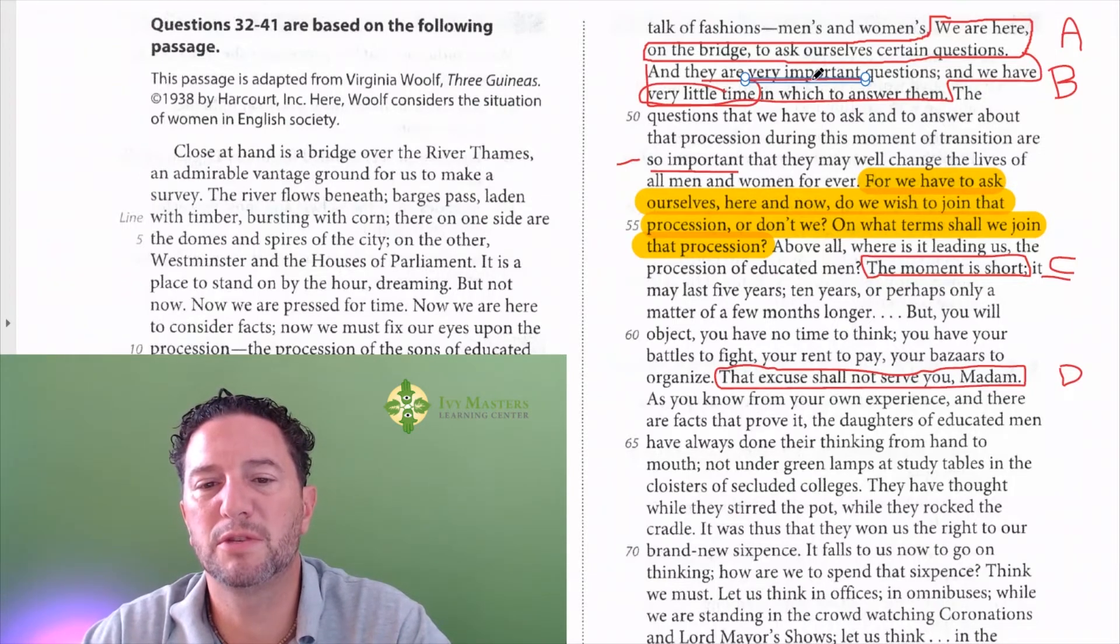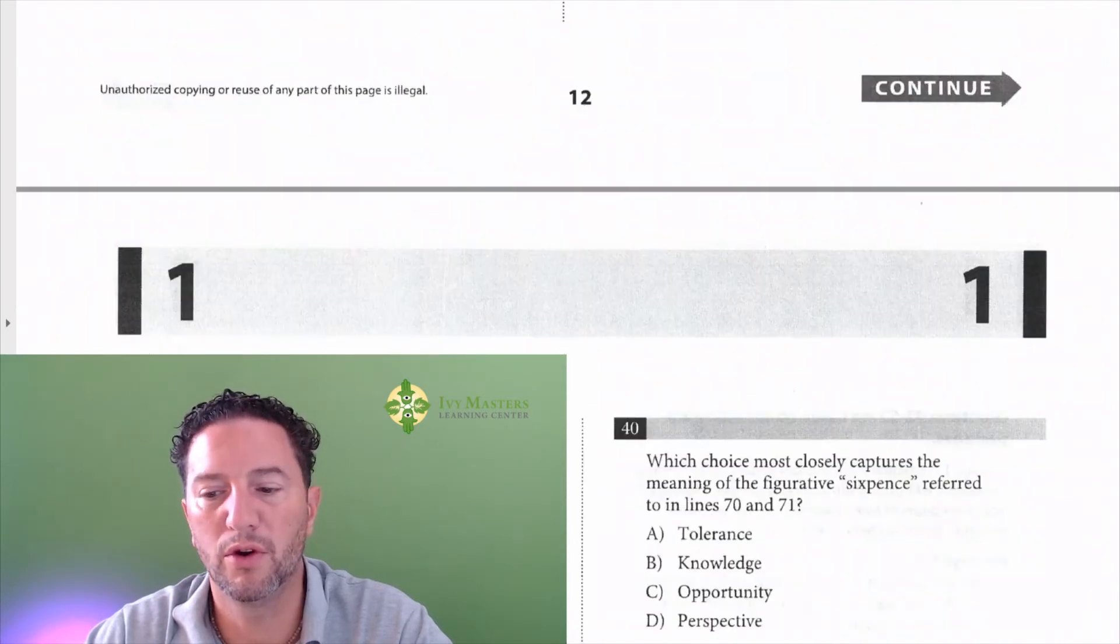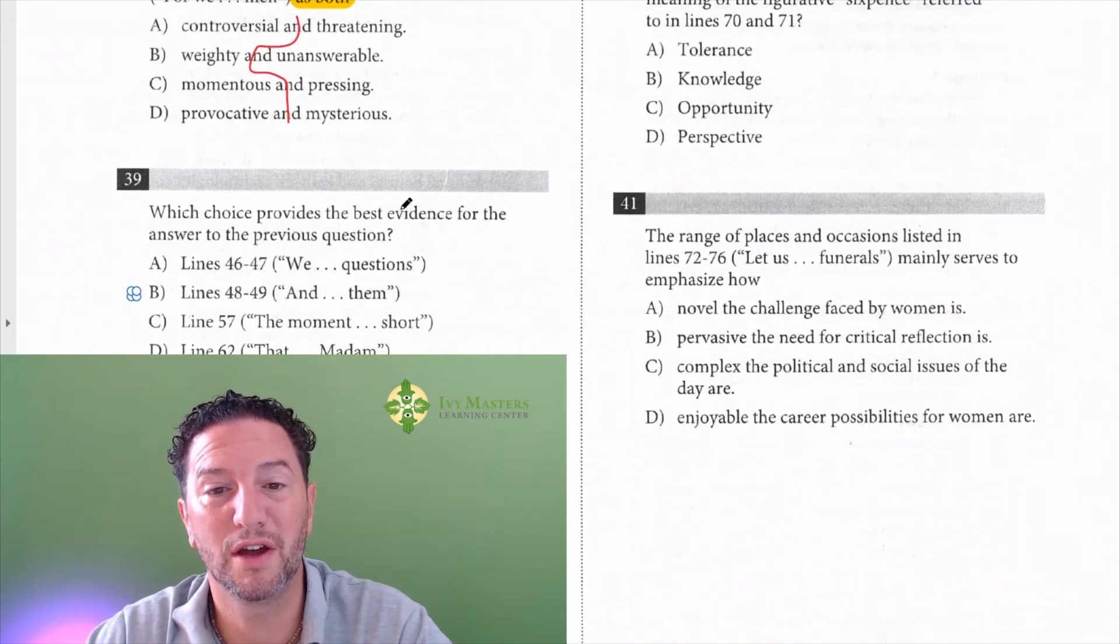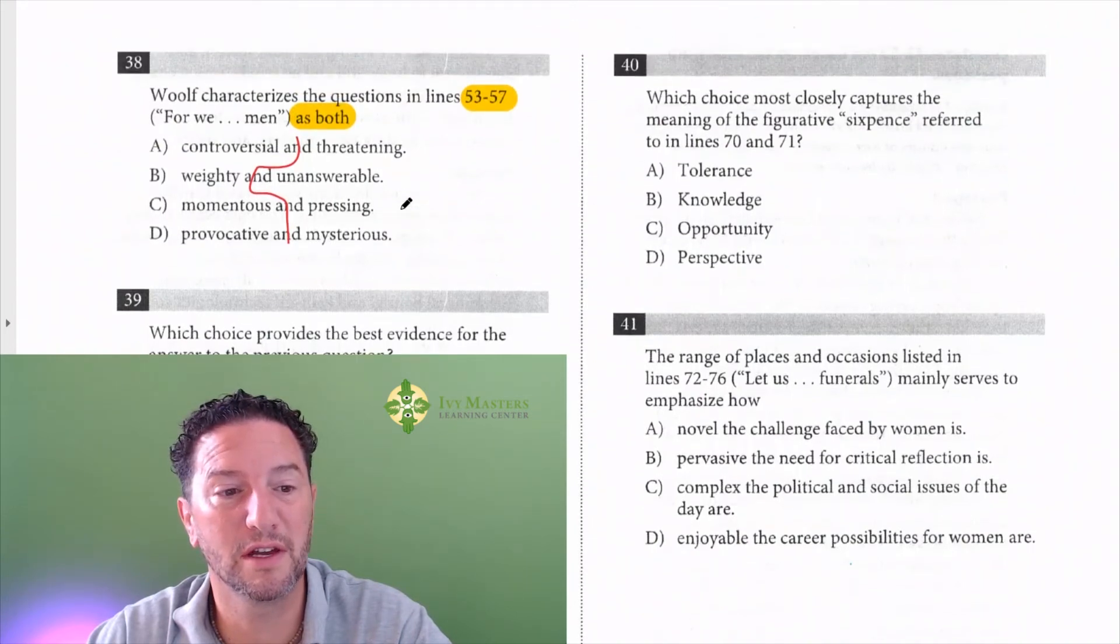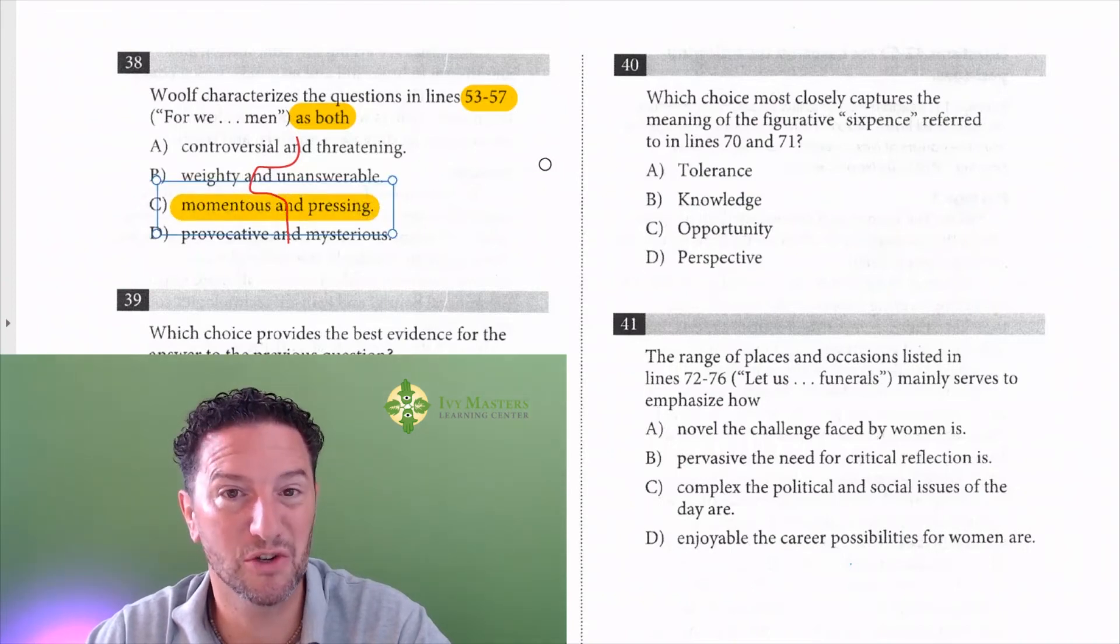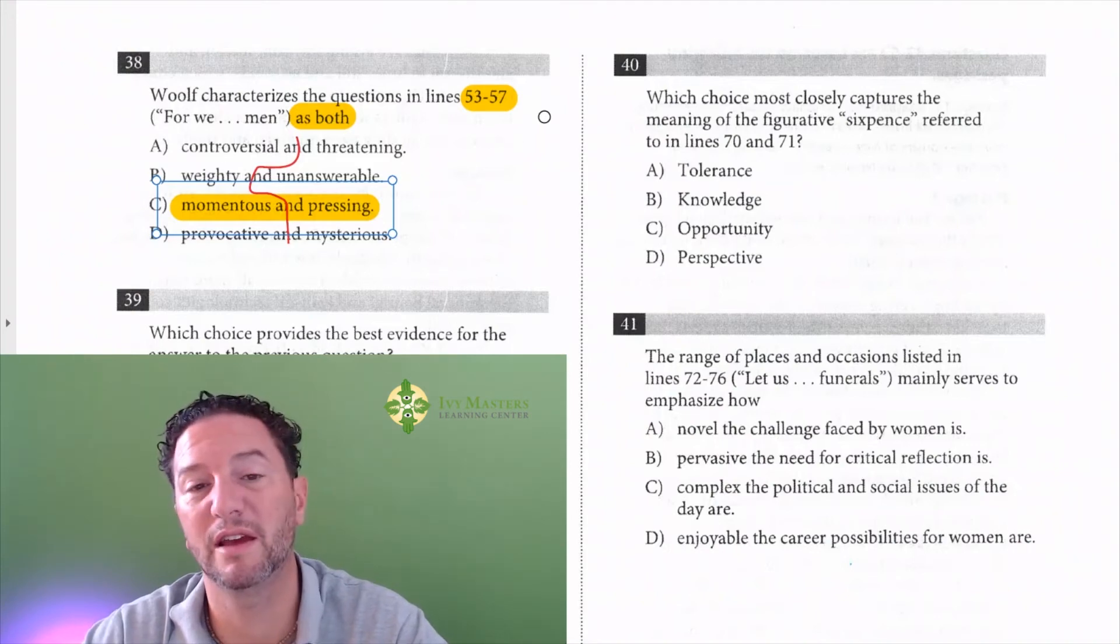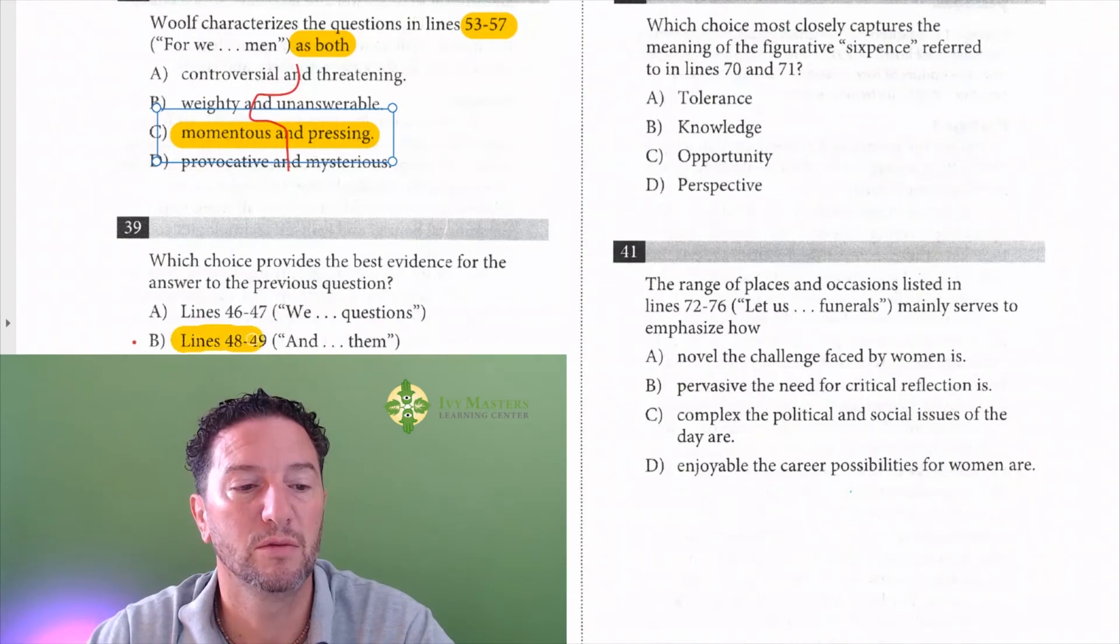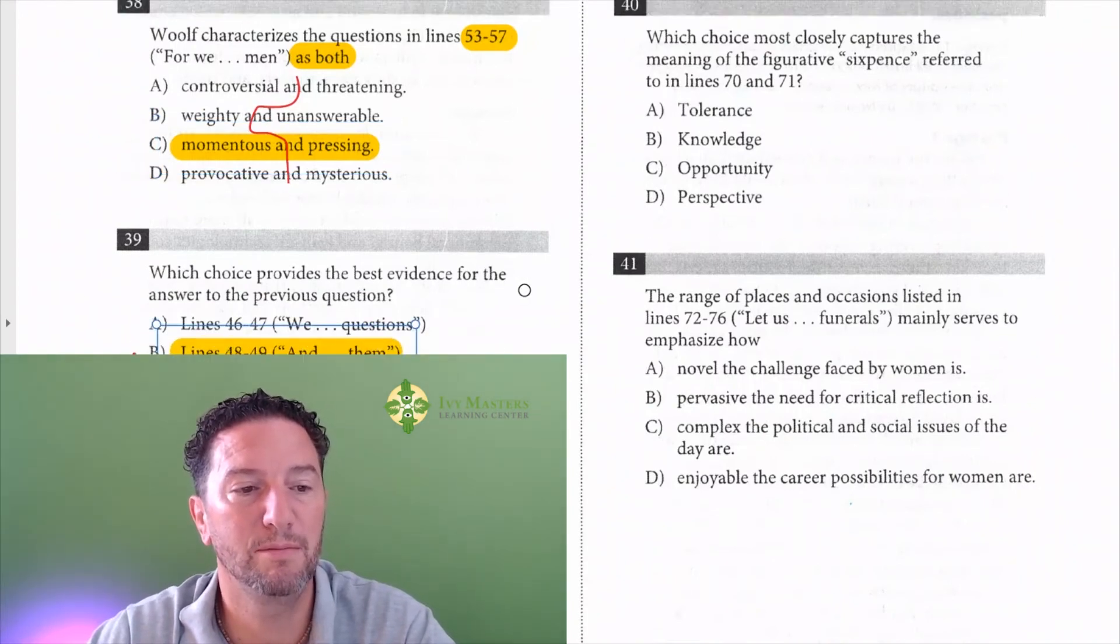Well, it looks like answer choice B, very important and very little time is our best answer for number 39. We've got to make sure we've got a match. We've got very important and very little time. And when we go through the answer choices, momentous means important. Impressing means it's urgent. In other words, you've got very little time. It looks like a fantastic answer choice. That's going to be our correct answer combination, which is going to be C for number 38 and B for number 39.